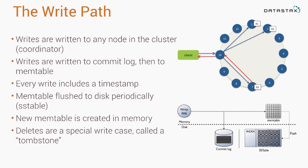When you send a write to a Cassandra cluster, all nodes in the cluster are equal, so any given node could service that write request. Whatever node you happen to be talking to for that request is called the coordinator node, because it's going to be doing the coordination with the rest of the nodes in the cluster on behalf of your query.